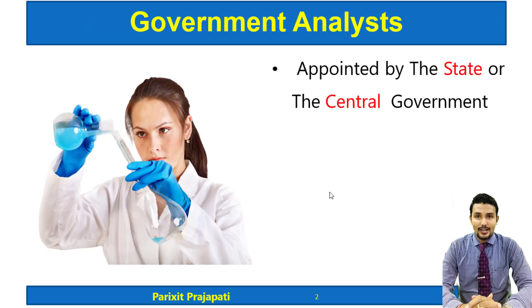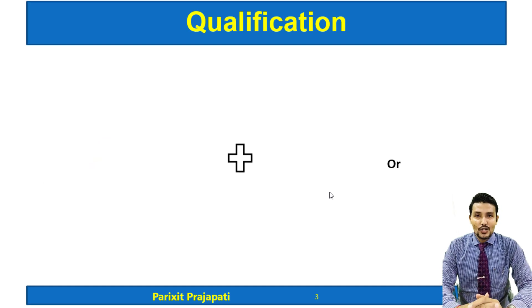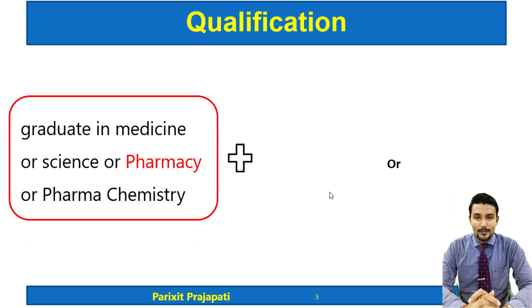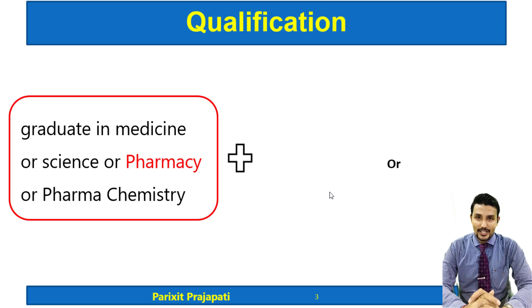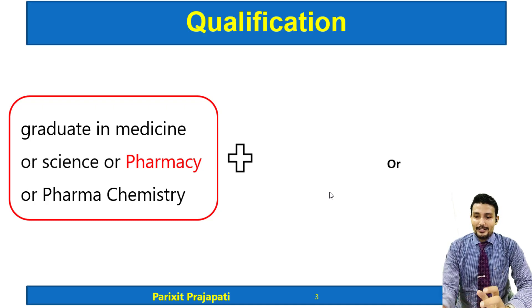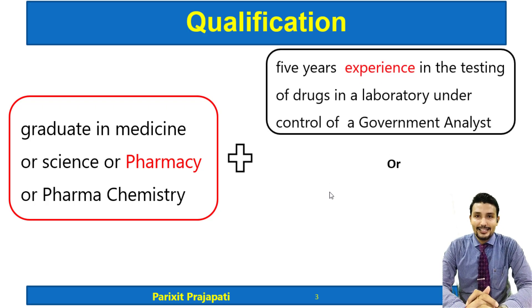First of all, who will appoint the Government Analyst? The Government Analyst may be appointed by the State Government or by the Central Government. To become a Government Analyst, a person should be a graduate in medicine, science, pharmacy, or pharmaceutical chemistry, so there is scope for B.Pharm candidates to become a Government Analyst.